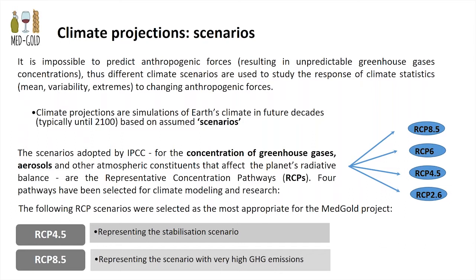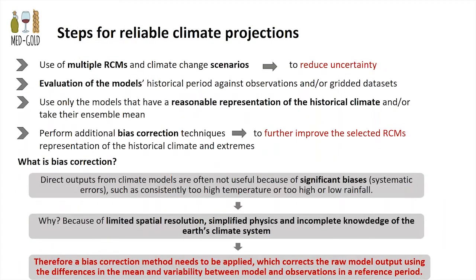The two scenarios selected are RCP 4.5, which represents a stabilization or moderate scenario, and RCP 8.5, which is the scenario with very high greenhouse gas emissions. Because we have considerable uncertainties when running the models, we don't just take climate projections as they are. We need to take as many regional climate model projections as possible in order to reduce uncertainty, and we need to take as many climate change scenarios as possible. Then we perform an evaluation of the models against observations for the region of interest, using only regional or global climate models that have a good regional representation of the historical climate.